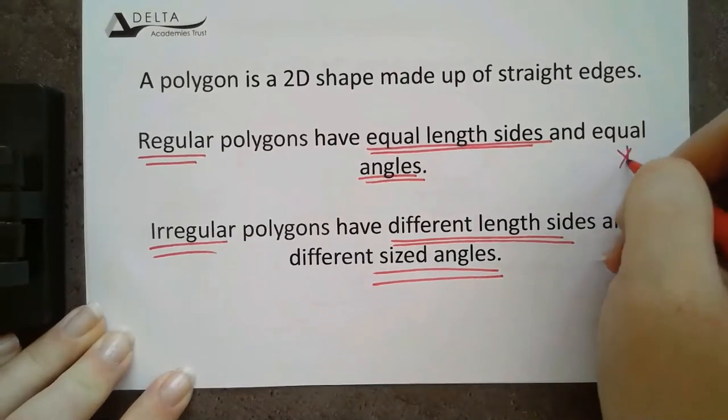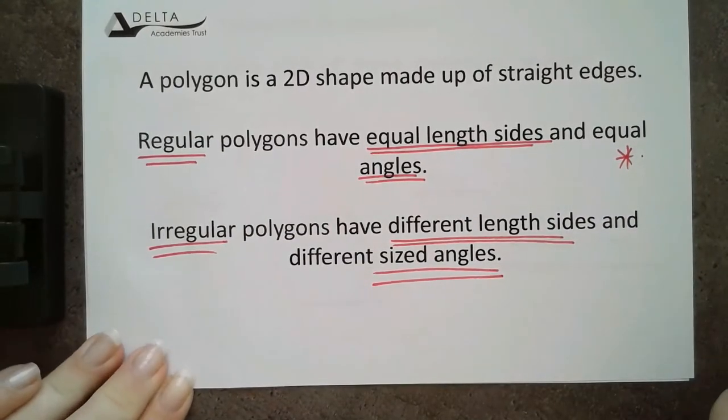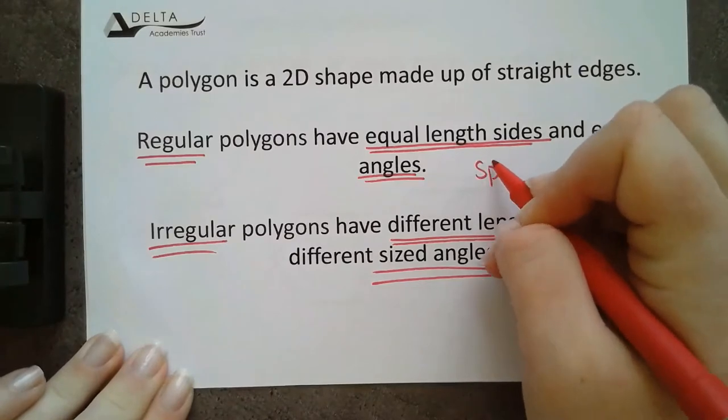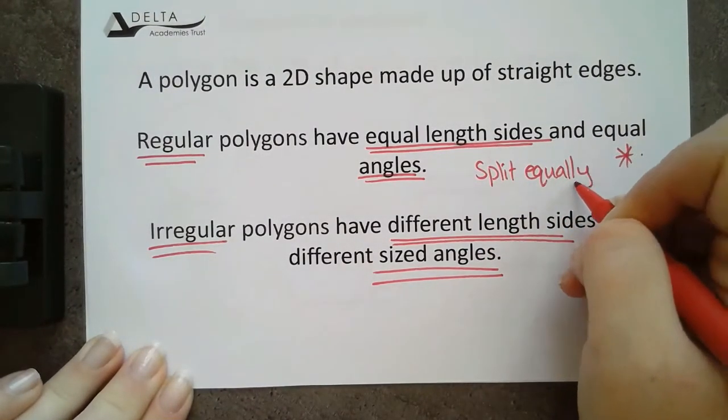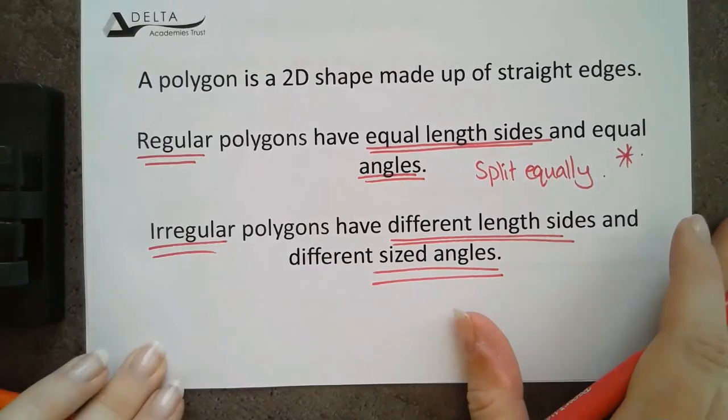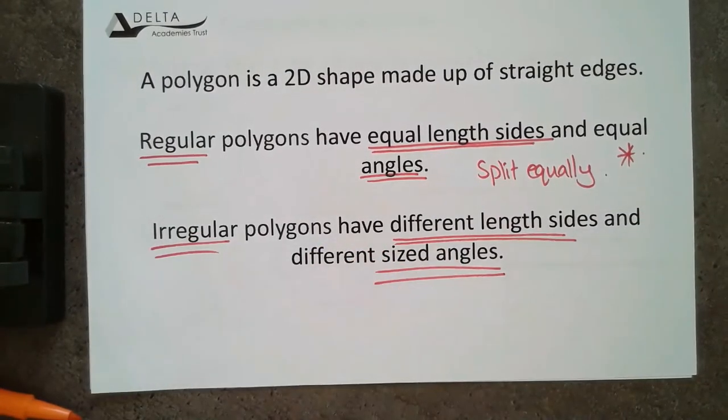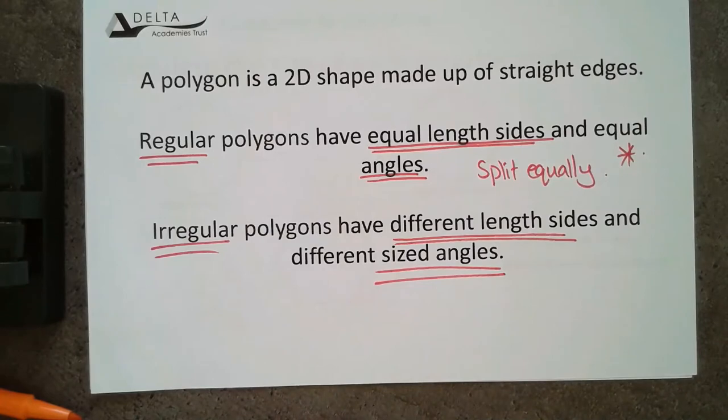These ones are a lot easier to work with because we know they're the same, which means they're split equally. And that's where we are going to focus lots of our attention because we can come up with really nice formulas for those ones. Irregular ones, we can use the general formulas, but they need a little bit more work because we don't know that everything is split equally.